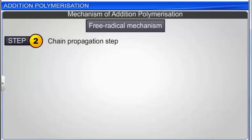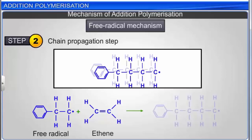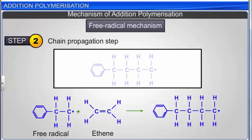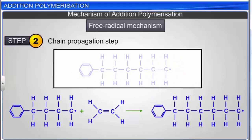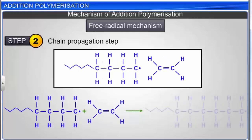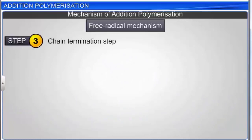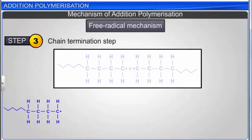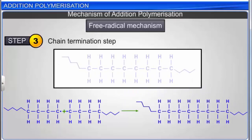The next step is the chain propagation step. The radical generated at the end of the chain initiation step reacts with another monomer, ethene, to form a new and bigger radical. This radical attacks another molecule of ethene to form a still bigger radical, and the series of reactions continues — the alkyl chain grows longer and longer. Finally, the chain termination step occurs when the product radical combines with another free radical chain, resulting in the formation of the polymerized product, polythene.